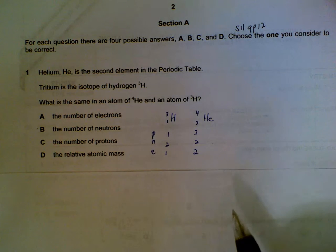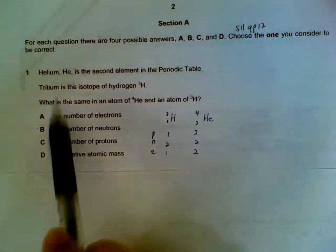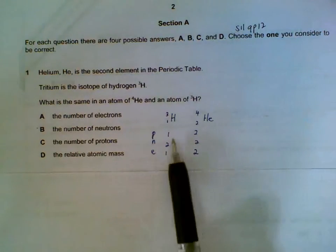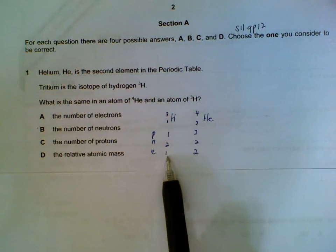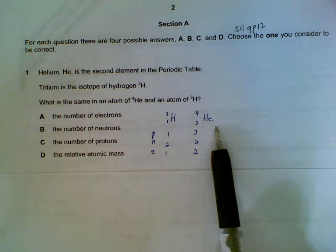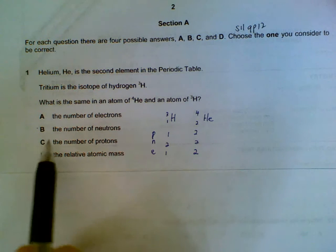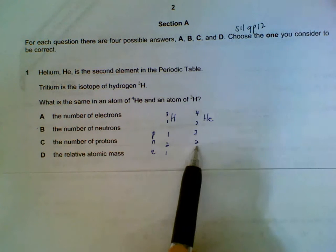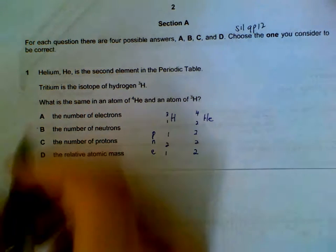Number one, comparing the subatomic particles of tritium and helium. So we have one proton, two neutrons and one electron for tritium. Two, two, two for helium. So we can see that the number of neutrons for them are the same. Two each.